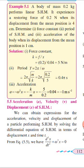For the force constant: K equals F divided by X. We consider only the magnitude, so the negative sign is removed. The restoring force is 0.2 Newton and displacement is 4 centimeter, that is 0.04 meter. So K equals 0.2 divided by 0.04, which equals 5 Newton per meter. That is our force constant.